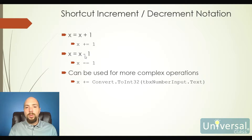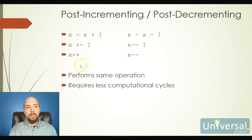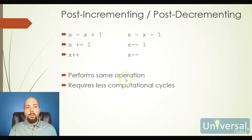C# also has shortcut operators for the most common increment and decrement operations. Instead of x = x + 1 or x += 1, we can simply write x++. All three mean exactly the same thing. Similarly, x = x - 1, x -= 1, and x-- all mean the same thing. The reason to use x++ is that in code we often use counters that simply increment by 1 over and over. This makes the code shorter, easier to read, easier to troubleshoot, and requires fewer computational cycles.